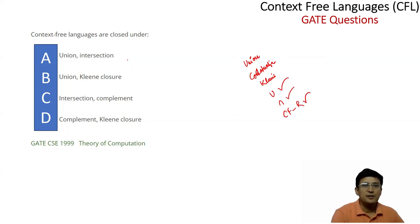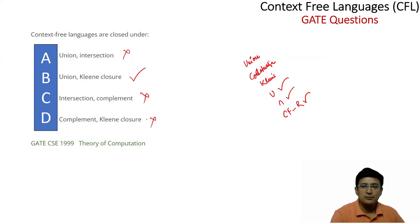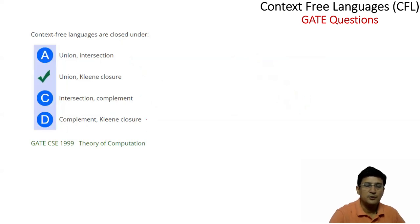This question asks about which operations context-free languages are closed under. Context-free languages are closed under union and Kleene star closure — yes, that is true. They are not closed under intersection and complement. Complementation and Kleene star closure together — no, that is not correct. So option two is the correct option.